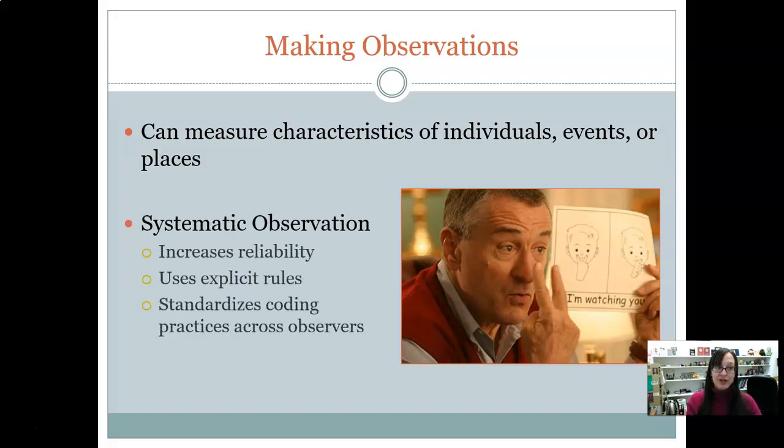Systematic observation is a specific way to observe something, but to do it in a really reliable way. There are really explicit rules that you follow when you're using systematic observation. You might have boxes to check while you're, say, observing police interactions. So you're going to check boxes if officers use certain words or gestures with the type of physical contact that was made. You have really explicit - I'm going to check this when this specific thing happens. And you come up with all these ahead of time so that it standardizes what you look for.